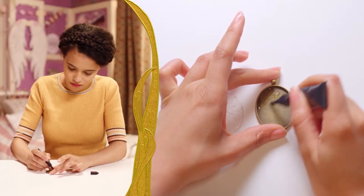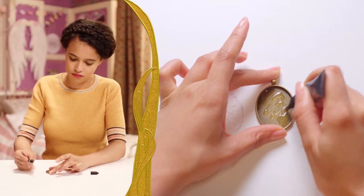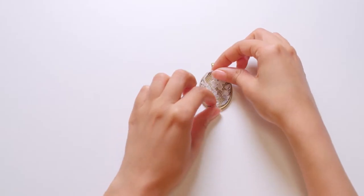Next apply a thin layer of glue to the inside of the pendant tray and stick the lace fabric into place.